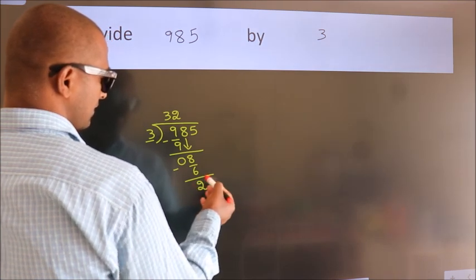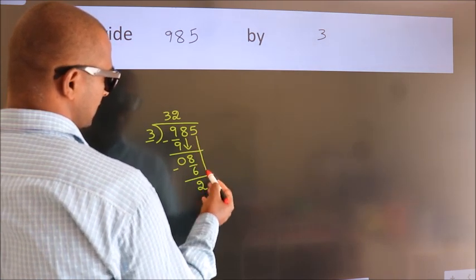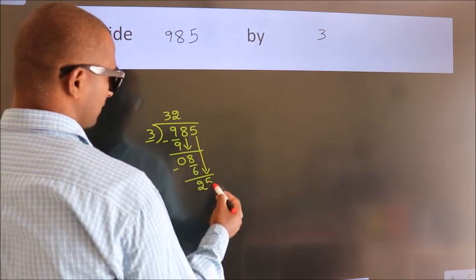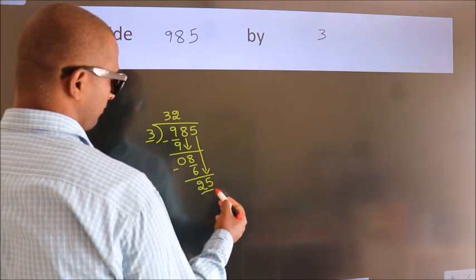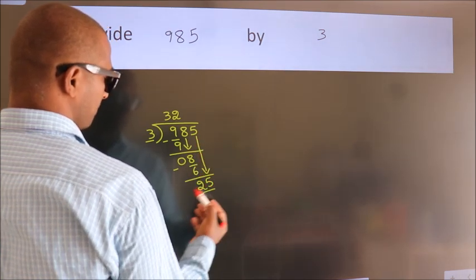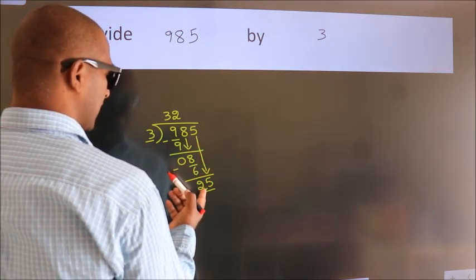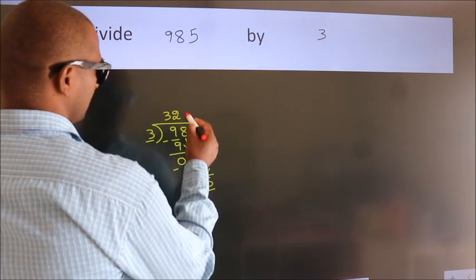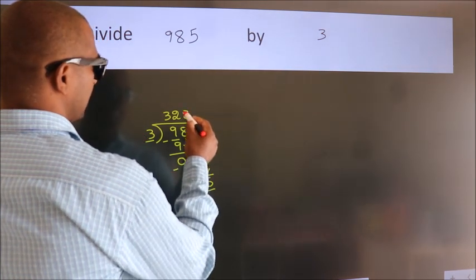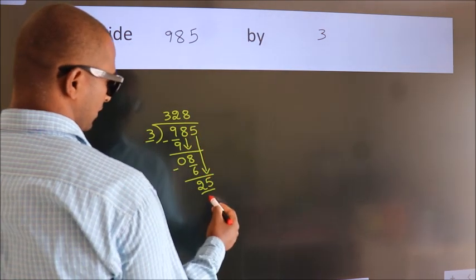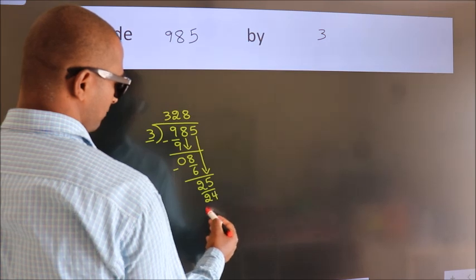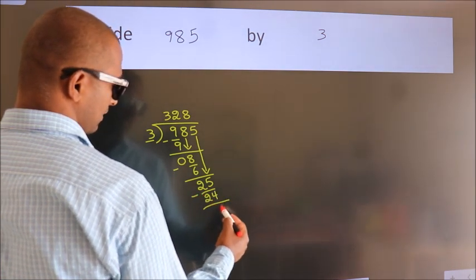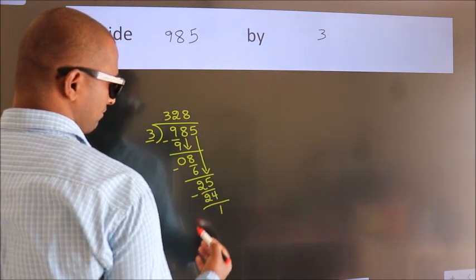After this, bring down the beside number. So 5 comes down, giving us 25. A number close to 25 in the 3 table is 3 eights are 24. Now we subtract. We get 1.